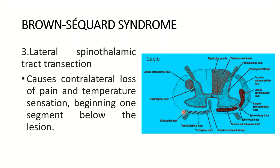Number three: lateral spinothalamic tract transection. This here is the lateral spinothalamic tract. The lesion causes a contralateral loss of pain and temperature sensation beginning one segment below the lesion. These fibers, as they are ascending tracts, cross to the opposite side obliquely, one segment above the level of the lesion.